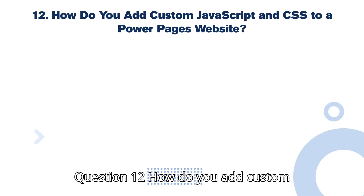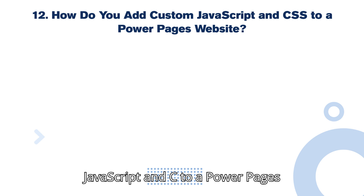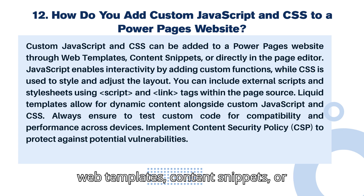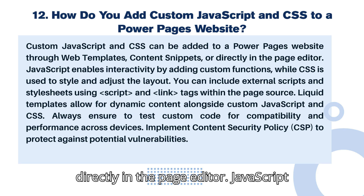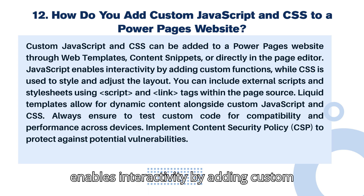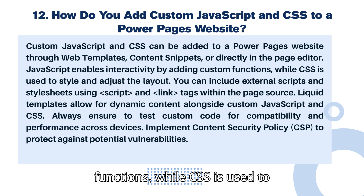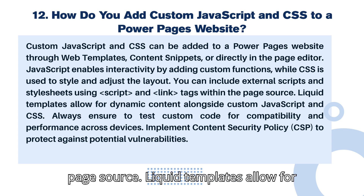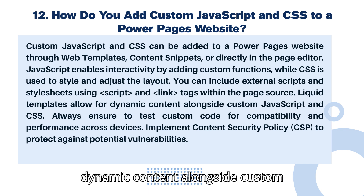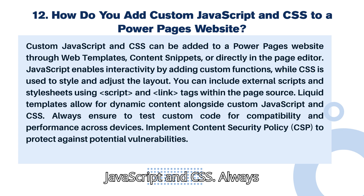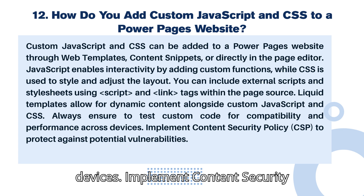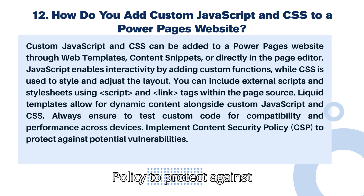Question 12: How do you add custom JavaScript and CSS to a Power Pages website? Custom JavaScript and CSS can be added through web templates, content snippets, or directly in the page editor. JavaScript enables interactivity by adding custom functions, while CSS is used to style and adjust the layout. You can include external scripts and stylesheets using script and link tags within the page source. Liquid templates allow for dynamic content alongside custom code. Always test for compatibility and implement Content Security Policy (CSP) to protect against vulnerabilities.